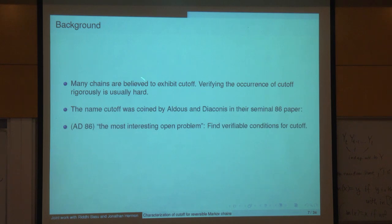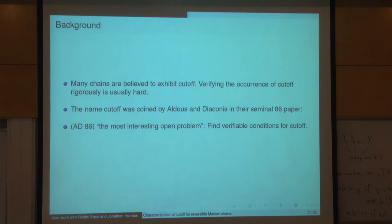Many chains are believed to exhibit cutoff. The simplest example I know that we don't know is random-to-random shuffle: you have N cards, choose a card at random, pull it out, put it back in a random position. It's order N log N moves, but the exact constant is not known. It's conjectured to be 3/4; Eliran Subag proved a lower bound of 3/4 · N log N, but we still don't know the upper bound.